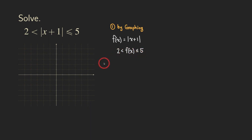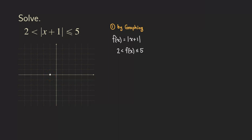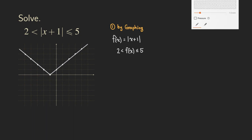Looking at this absolute value function, the plus 1 tells you that if you know the graph of y = |x| (the parent function), all you need to do is move one unit to the left — a horizontal translation. You move the whole V-shape graph one unit to the left. Starting from the origin, where the vertex is for the parent function, if you move one unit to the left, the vertex lands right here. So I'm going to place the vertex and construct my V-shape graph.